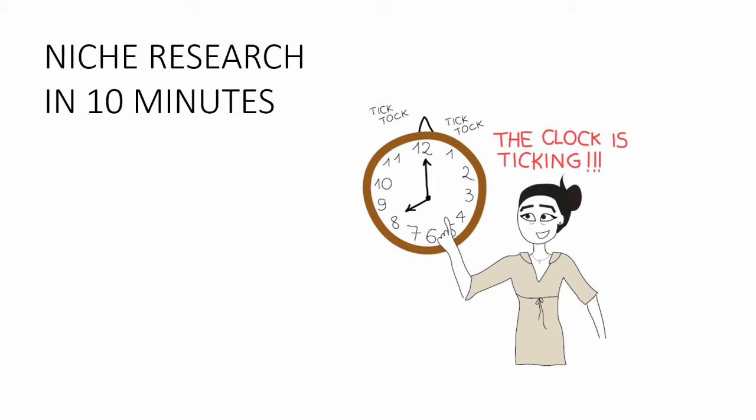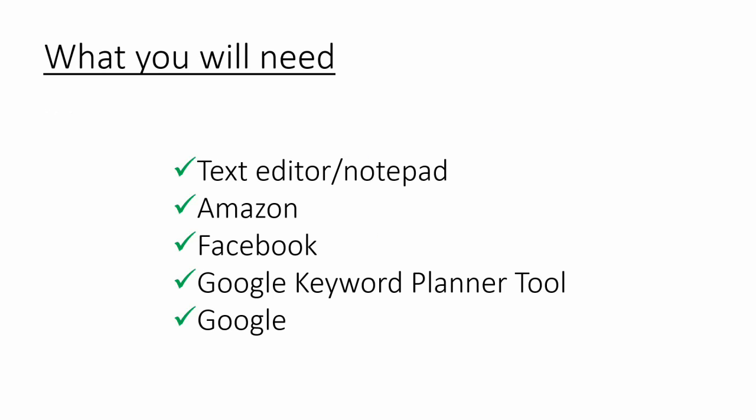Hi everyone. I wanted to make this quick tutorial just to show you that niche research doesn't have to be time consuming. What I'm going to show you here is a quick technique to quickly knock out 5 or 10 potential niches in the space of a couple of hours, so that you then have something to start working on and narrowing down in order to choose an actual niche to move forward with. This is niche research in 10 minutes flat.